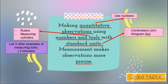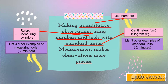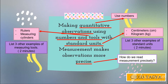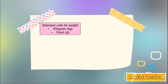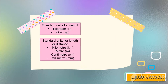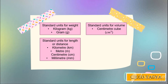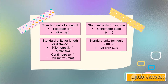Standard units — examples are centimeters and kilograms, among many others. Standard units for weight are kilogram (kg) and gram (g). Standard units for length or distance are kilometer, meter, centimeter, and millimeter. Standard units for volume are centimeter cubed (cm³), and for liquid are liter and milliliter.